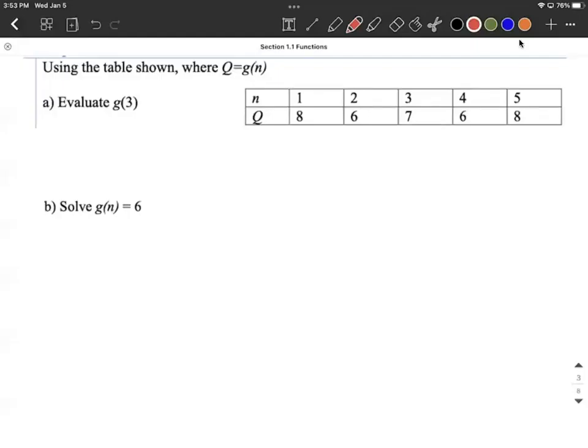Okay, we're given a table. We'd like to use this to answer a couple questions. Now it's important to note how they define this. They say Q equals g of n from the beginning here.